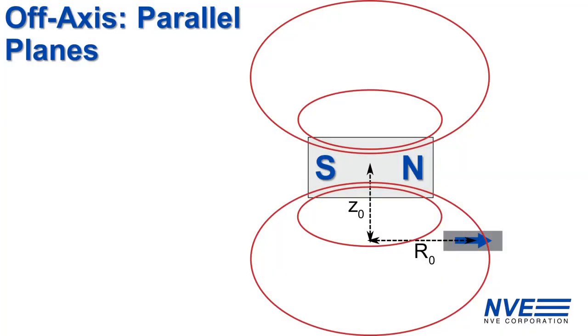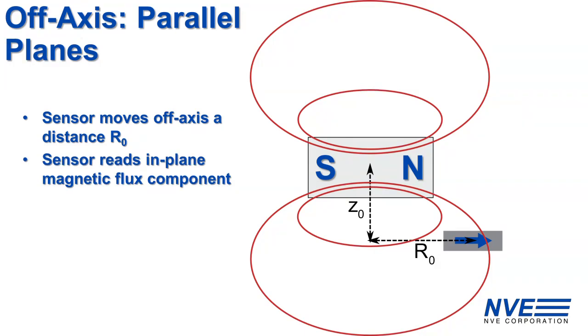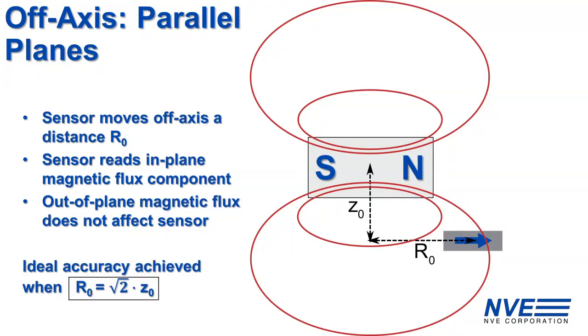This off-axis configuration works by keeping the magnet and sensor planes parallel, and moving the sensor off-axis radially a distance R0. The sensor detects the planar component of the rotating flux. This works because the sensor does not respond to out-of-plane magnetic fields. Finding the ideal sensor location is easy. Just make sure R0 is equal to the square root of 2 times Z0.